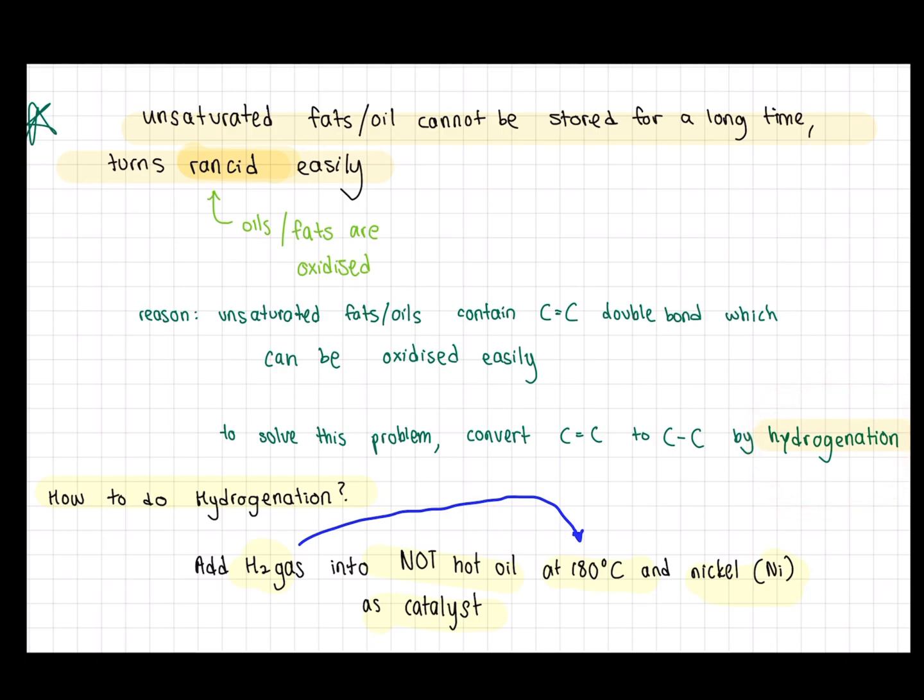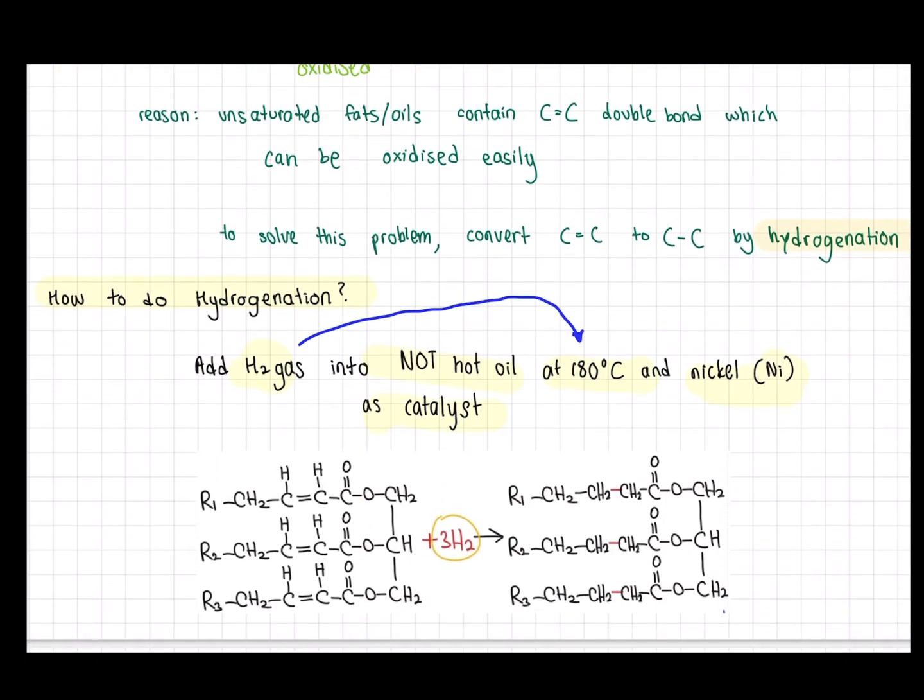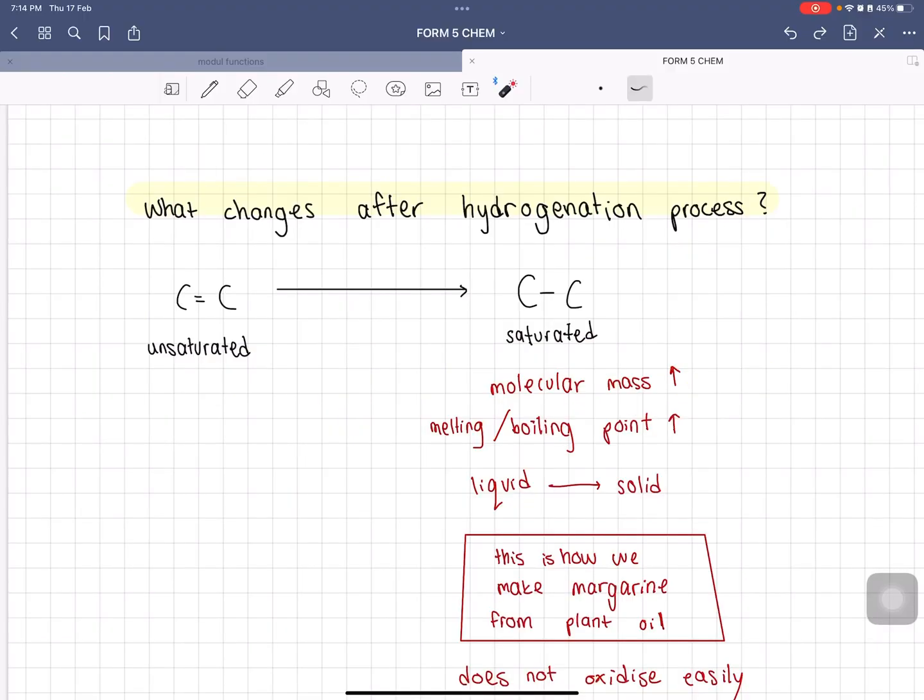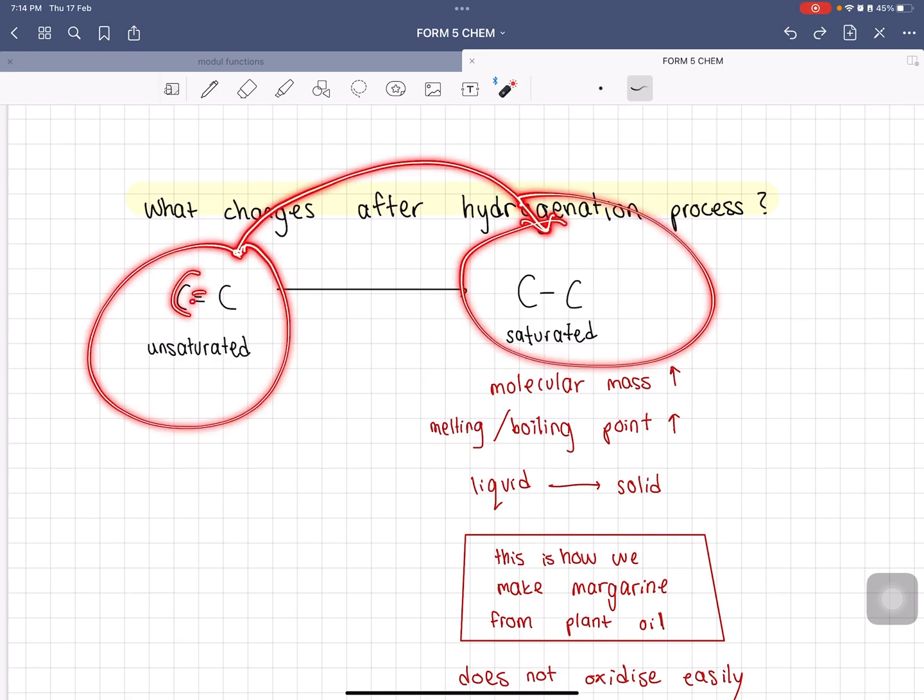How do you do hydrogenation? First you add hydrogen gas. The hydrogen gas you have to make sure is at 180 degrees into a hot oil and add nickel that acts as a catalyst. Some things that eventually change after the hydrogenation process: the unsaturated fatty acid is now turned into saturated fatty acid. From a C=C double bond it is turned into a C-C single bond.